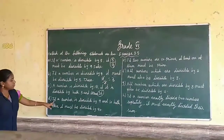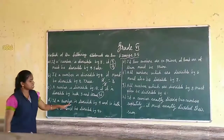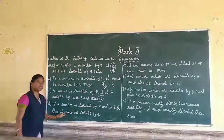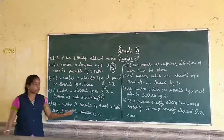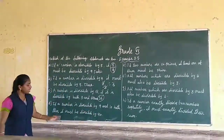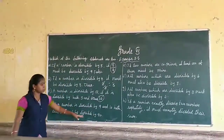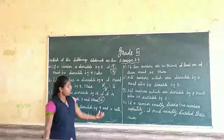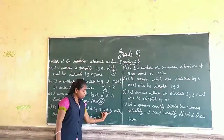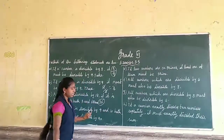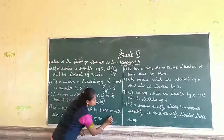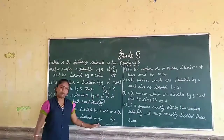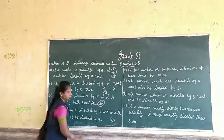Next statement: if a number is divisible by both 9 and 10, then it must be divisible by 90. The number that is divisible by both 9 and 10 is 90 itself. And 90 is divisible by 90. So this statement is true.